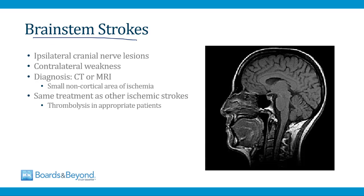Brainstem strokes are supplied by the posterior circulation — branches of the vertebral and basilar artery. Strokes in the brainstem lead to ipsilateral cranial nerve lesions and contralateral weakness of the arms and legs, because motor fibers in the brainstem cross to supply the other half of the body. Diagnosis is made by CT or MRI showing a small non-cortical area of ischemia in the brainstem, and treatment is the same as other ischemic strokes with thrombolysis in appropriate patients. The rule of fours is a helpful method for identifying the location of brainstem strokes.